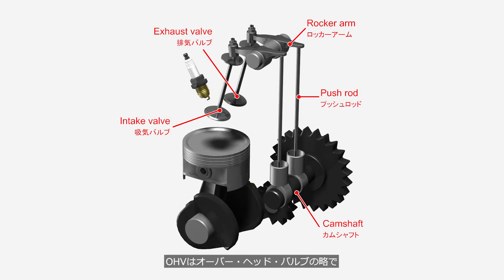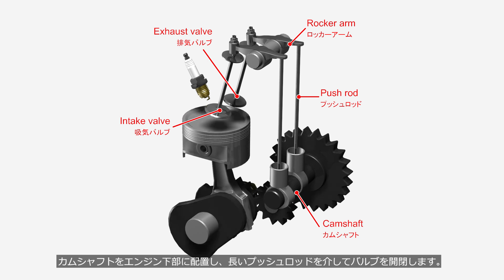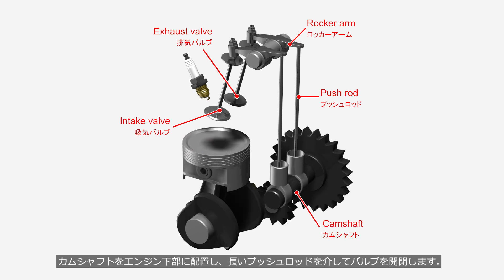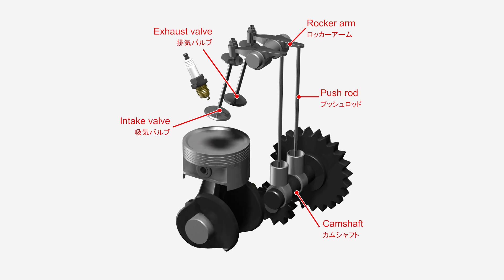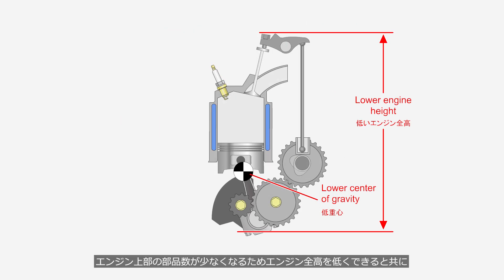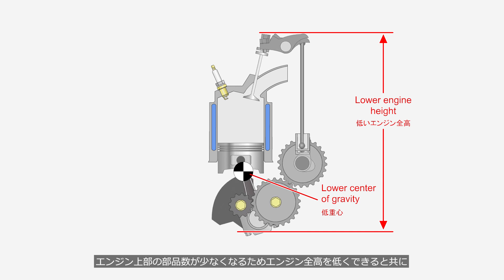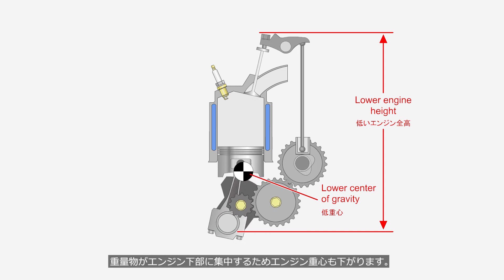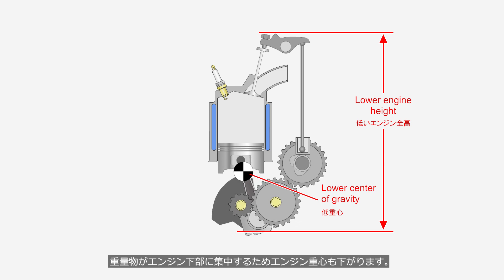OHV stands for overhead valve, where the camshaft is located at the lower part of the engine and the valves are operated via long pushrods. Since there are fewer components in the upper part of the engine, the overall engine height can be reduced. And with the heavier parts concentrated in the lower section, the engine's center of gravity is also lowered.